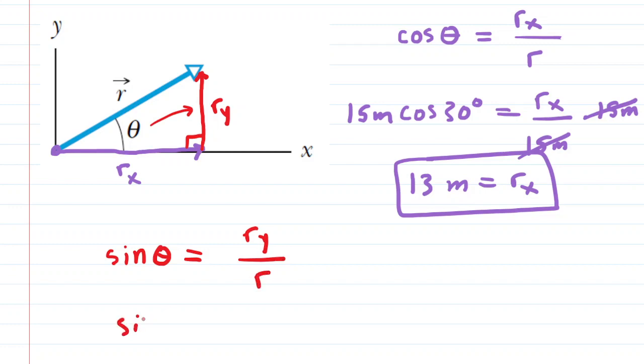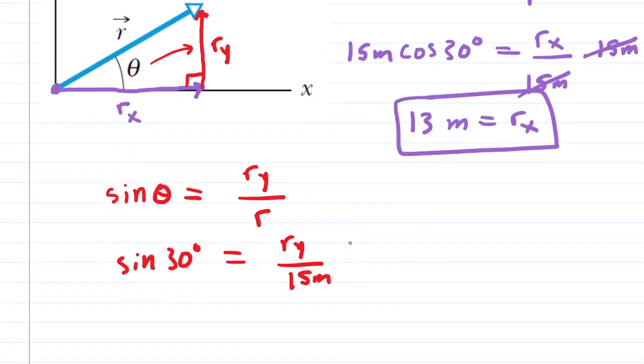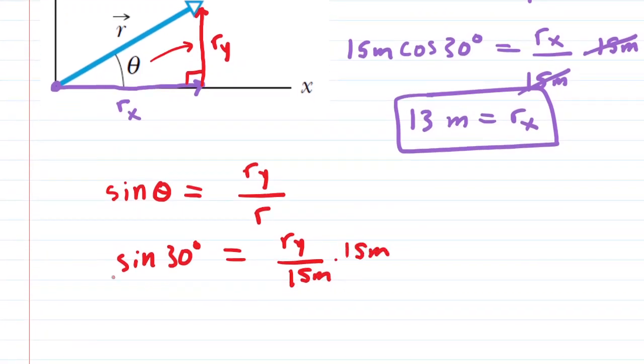We can fill in the same data as before, so sine of 30 degrees equals r sub y over 15 meters. Then multiply both sides of the equation by 15 meters, just like before.